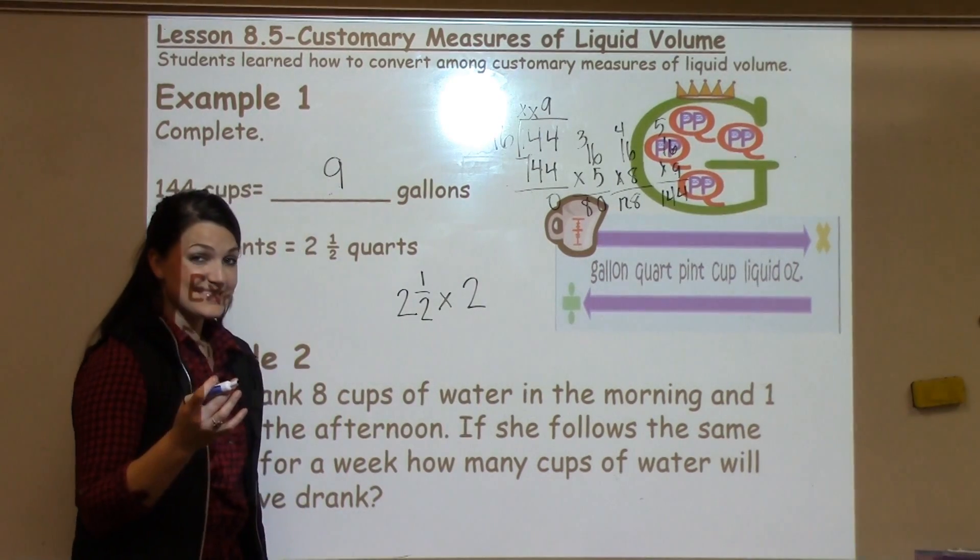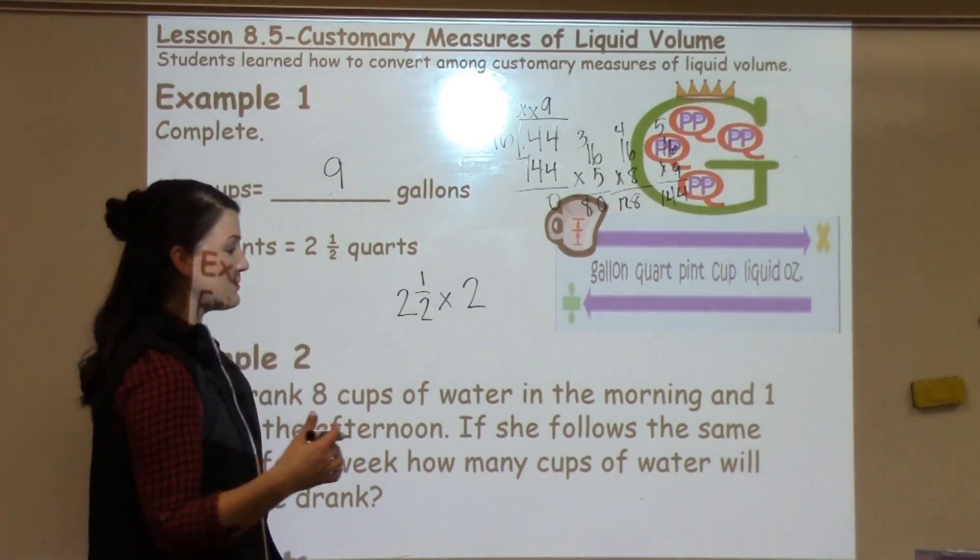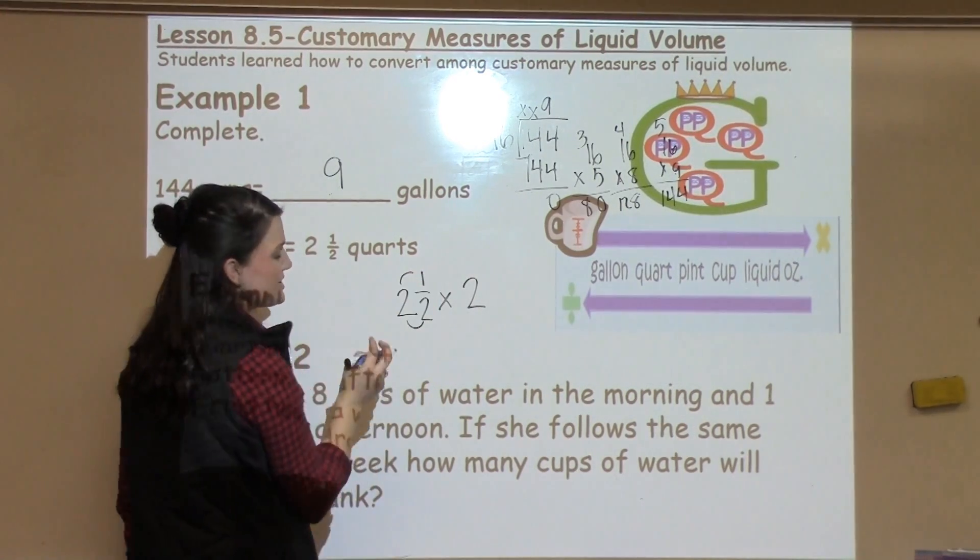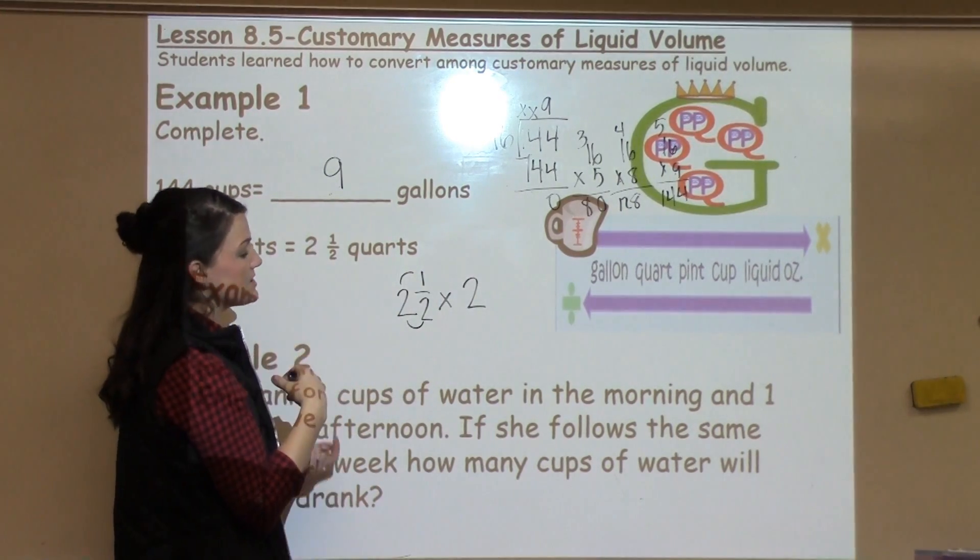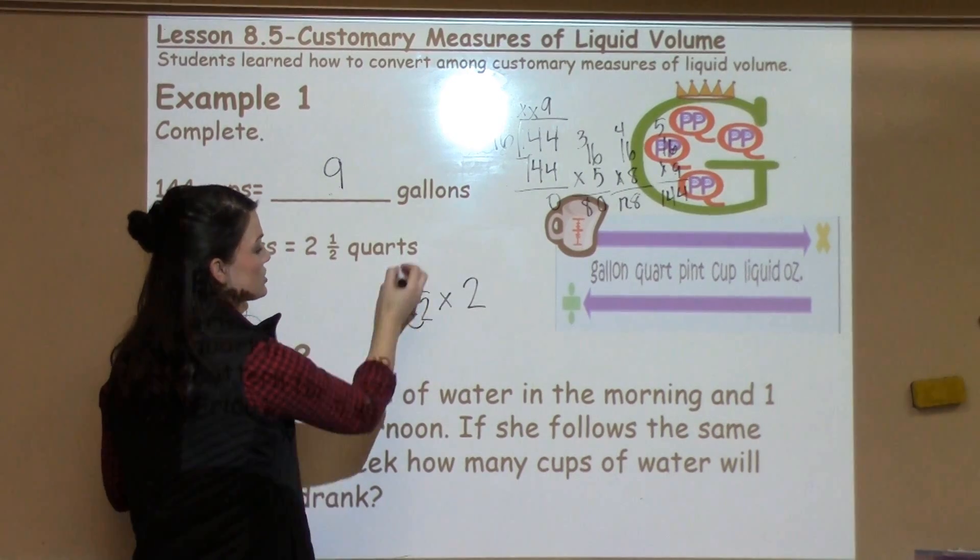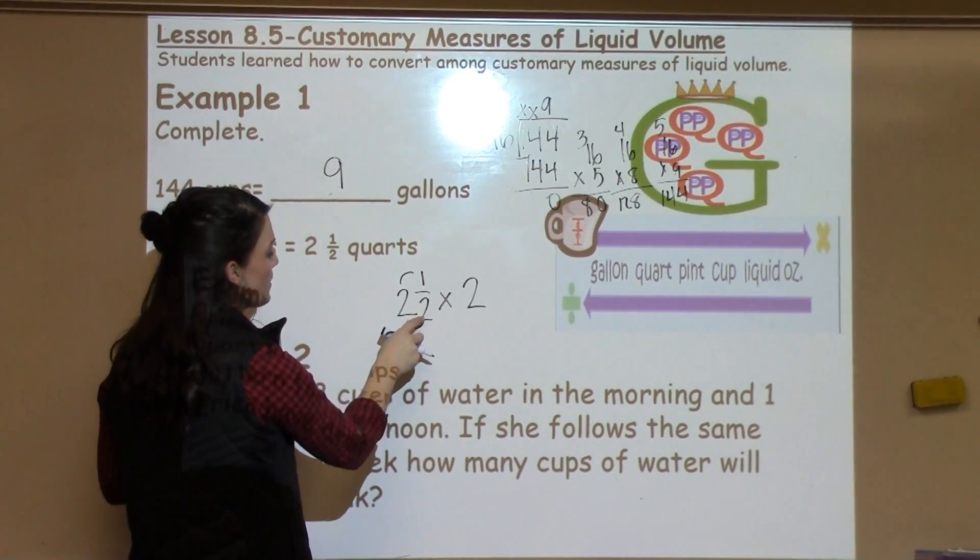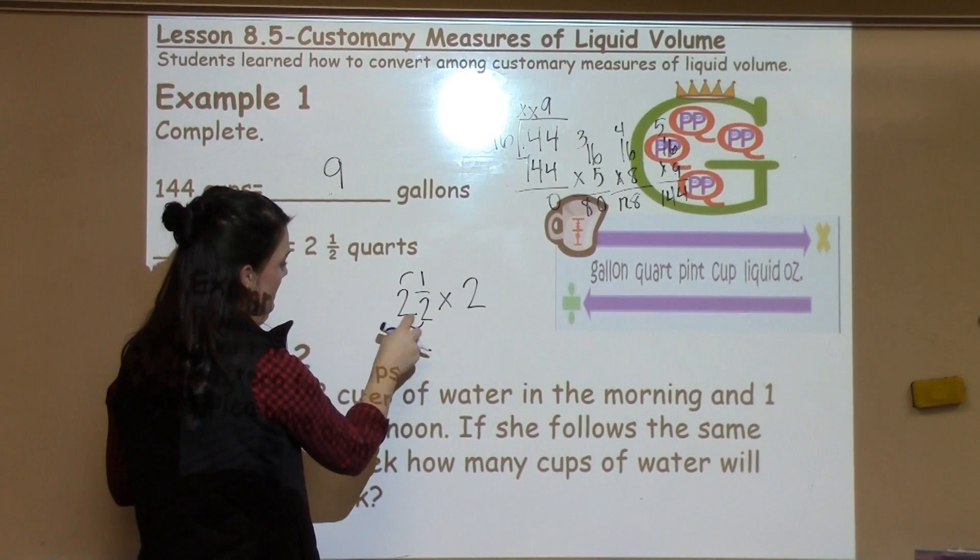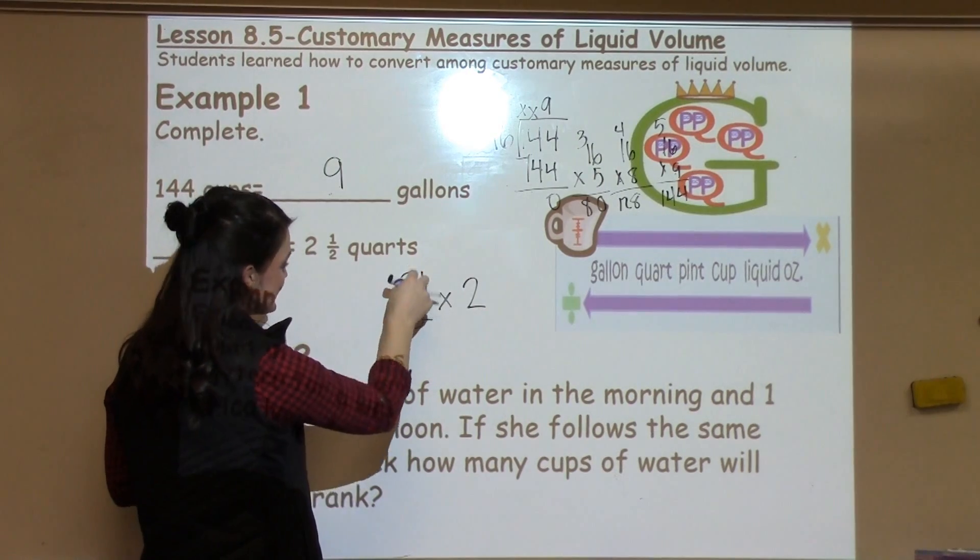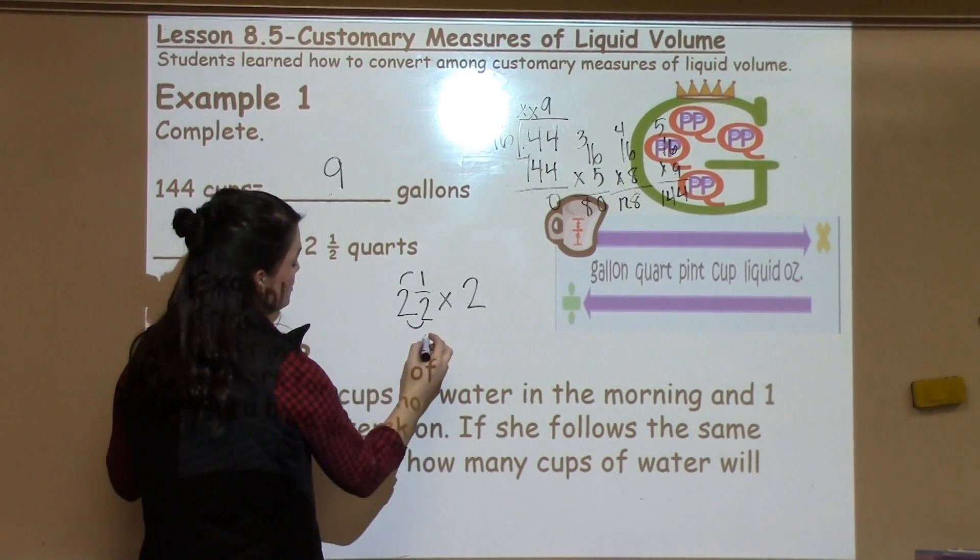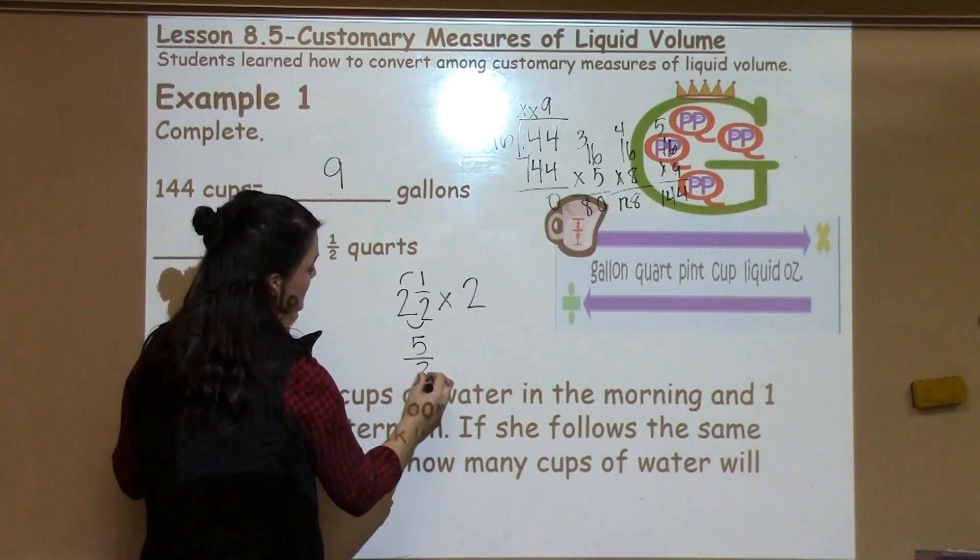Now, we're going to have to dig back in our brain to think about how we multiply with mixed numbers. Hopefully, your student remembers that we need to do the loop-de-loop trick. Some teachers call it the backflip. Some teachers call it the C method. But, it's where you need to multiply your denominator and your whole number and then tack on or add on your numerator to make it 5 over 2.